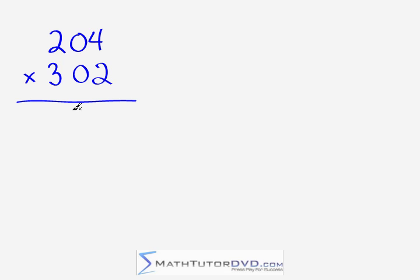We need to make sure that you've already watched the last section on three-digit times two-digit multiplication, because we did a lot of criss-cross multiplication there. We're going to use the exact same method here and just take it one step further by making our bottom number a little bit bigger. Once you understand the last section, this section's a piece of cake, and you'll impress your friends while speeding yourself up on tests and exams.